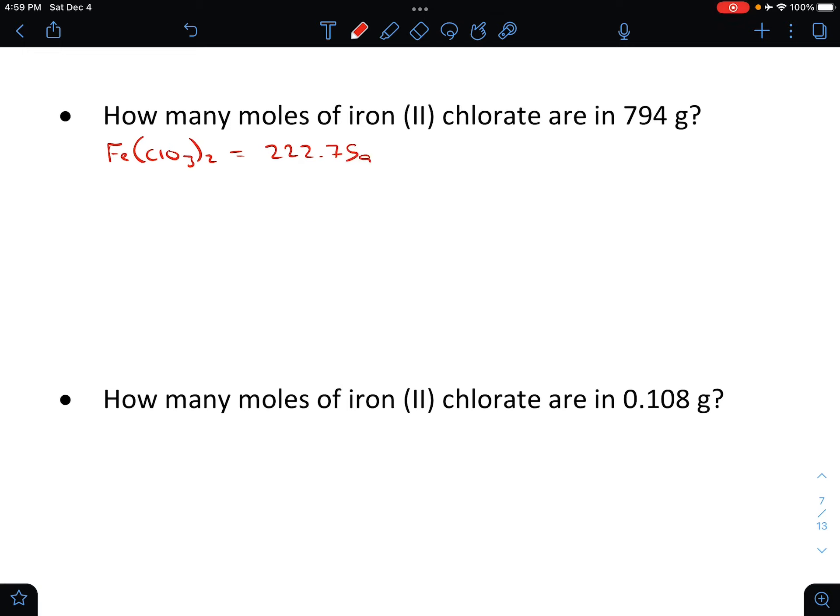That's what I remembered, but I wasn't sure. So there's our molar mass there. This one's just going to be a little bit different because it's going to be division, but still the same thing. This time we're looking for moles of iron two chlorate. We have 794 grams, so we've got 794 grams of iron two chlorate.